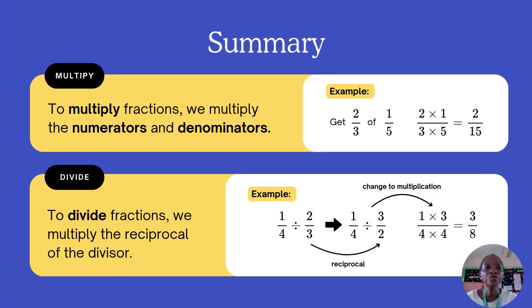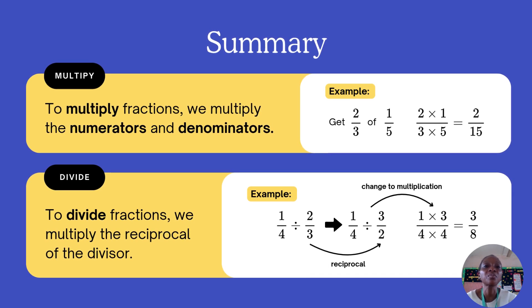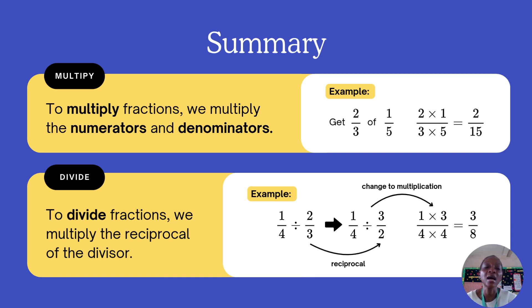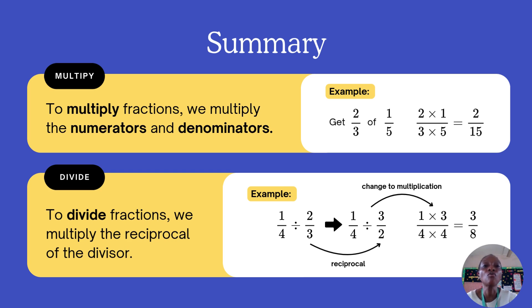Let's do a quick summary of today's lesson. We started with multiplication of fractions: multiply the numerators, get an answer; multiply the denominators, get an answer. For example, two over three of one over five means two times one all over three times five — two over fifteen. To divide fractions, find the reciprocal of the divisor. For example, one over four divided by two over three: swap to get three over two, change divide to times, giving one over four times three over two. One times three is three, four times two is eight — the answer is three over eight.